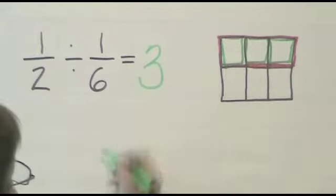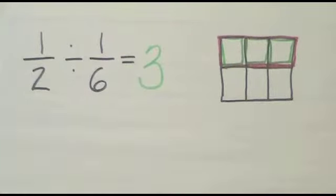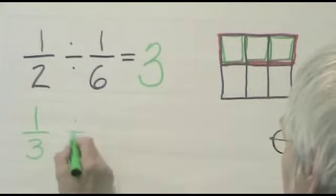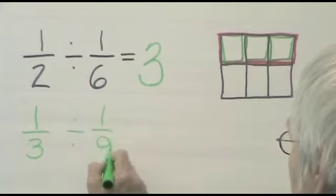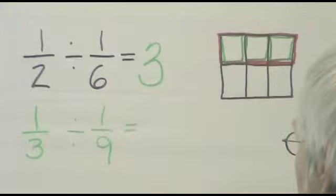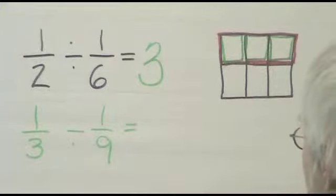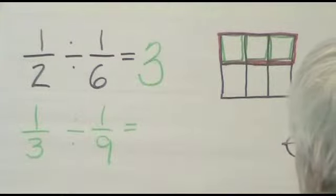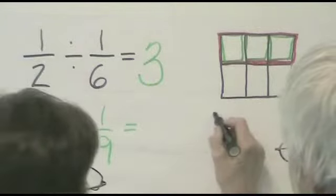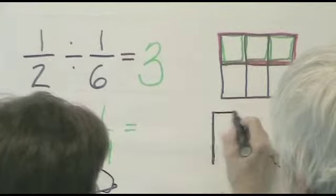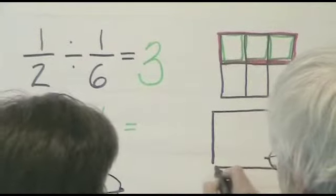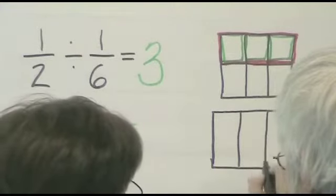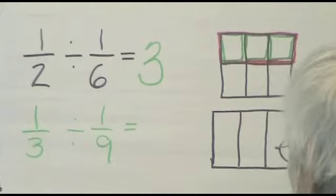Next one. A third divided by a ninth. One-third divided by one out of nine equals... So I need a... You need thirds. Thirds. Because we want to see how many ninths fit into that. We need ninths.